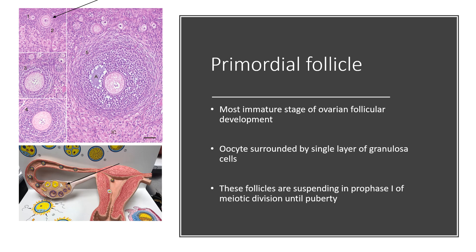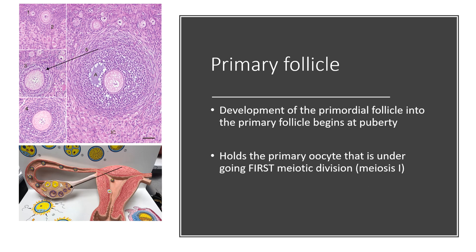Within the ovary, you have multiple stages of development. The most immature stage of follicular development is the primordial follicle — this is when the oocyte is surrounded by a single layer of granulosa cells, which I have pointed out in the microscope slide here. I want to point out that it is these primordial eggs, with the primordial follicle, that are suspended in prophase I of meiotic division until puberty. Also note that the follicle is not the same thing as the oocyte or egg — the egg is encapsulated and surrounded by the follicle.